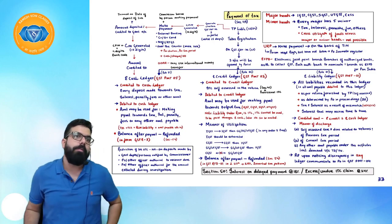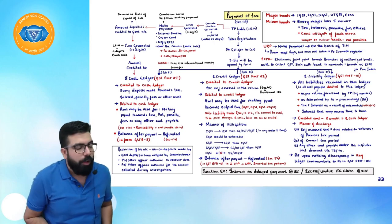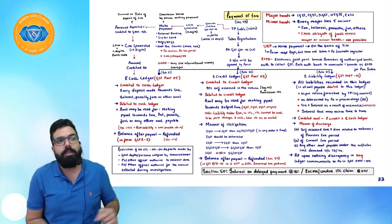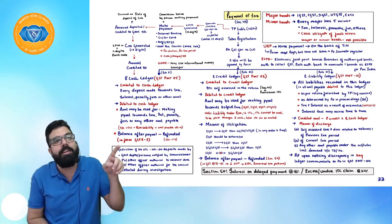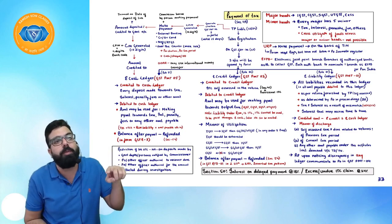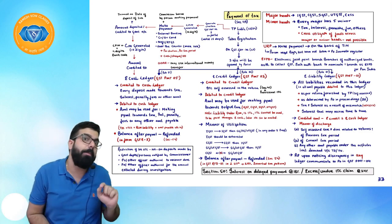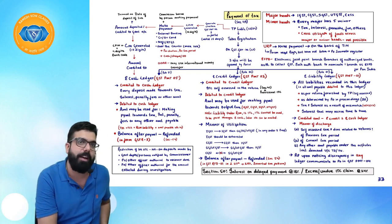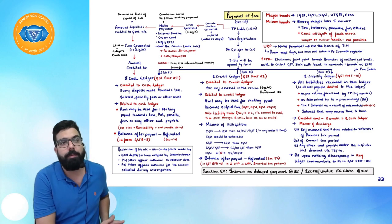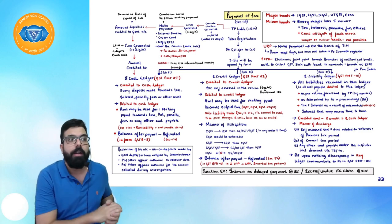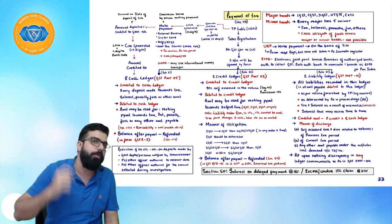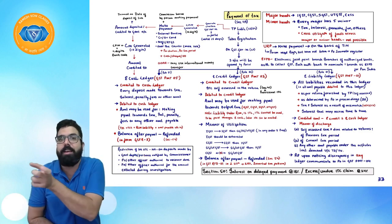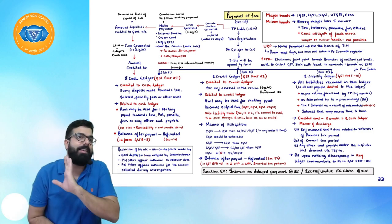Good evening everyone. We'll go ahead and have our Mahar Revision Part 3 today. After ITC, we are going to discuss payment of taxes. Whenever a person takes online registration on the GST portal, three accounts will be opened for him: e-liability ledger, e-credit ledger, and e-cash ledger.